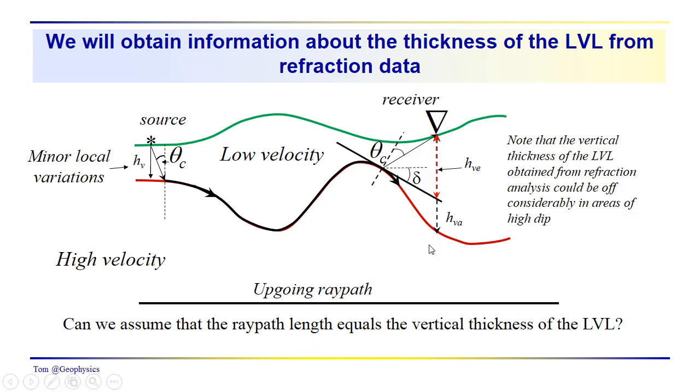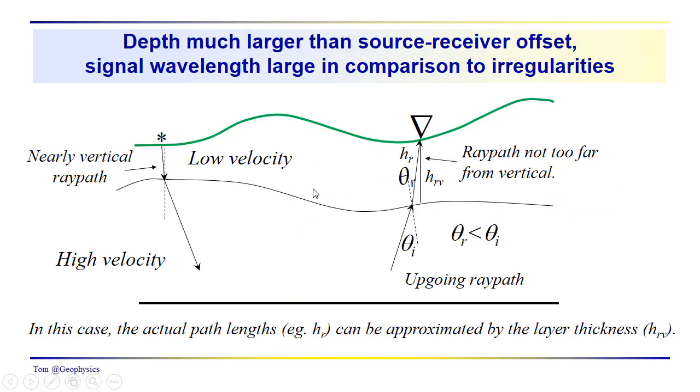So what assumptions do we have to make? What conditions do we hope for, do we have to test for, in the near surface environment in order to take this particular approach? That's one of the questions that we have to ask. And in this particular case, this application for determining what the thickness of the low velocity layer is, if we make this assumption then we have to assume that the irregularities, the irregularities on the bedrock interface, are fairly small. So that these calculations of the vertical thickness of the weathered zone from our refraction data will be fairly accurate.